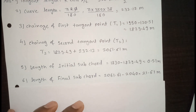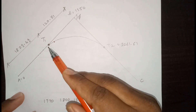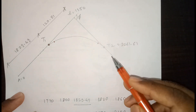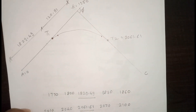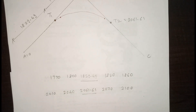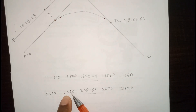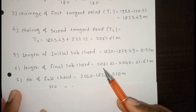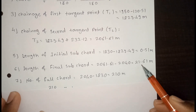Now the length of the final sub-chord. The last chainage on the curve is T2 at 2061.61 meters. The previous peg chainage is 2040, and before that is 2010. For the final sub-chord, always consider the lower chainage: existing chord minus lower chord equals 2061.61 minus 2040, so the length of the final sub-chord is 21.61 meters.